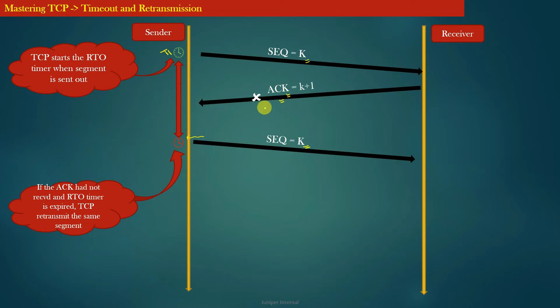If the ACK arrives before the timer expires, the TCP concludes that the segment has been successfully delivered to the receiver and it simply cancels the retransmission timer for that particular segment.